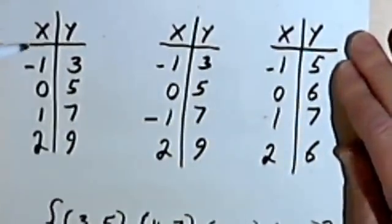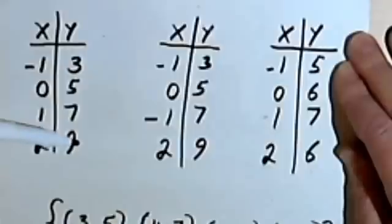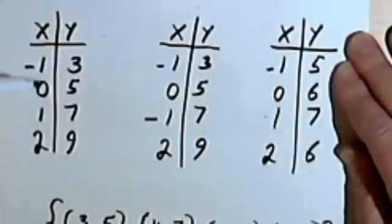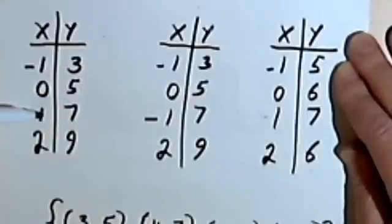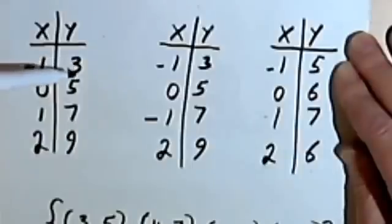Here are some tables. In this first table, I've got my input as the x column — that's the independent variable. The output is going to be the y column, the dependent variable. So when my input is negative 1, my output is 3. When my input is 0, my output is 5. When my input is 1, my output is 7. When my input is 2, my output is 9. So as long as I know what the input is, I will always know exactly, without a doubt, what the output is.